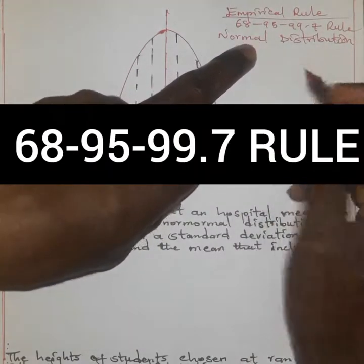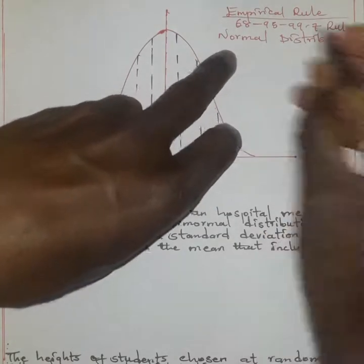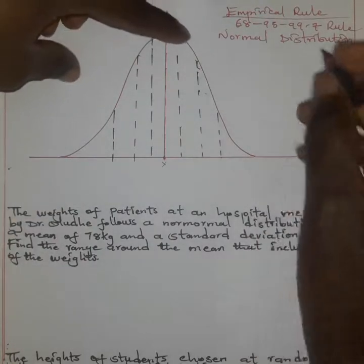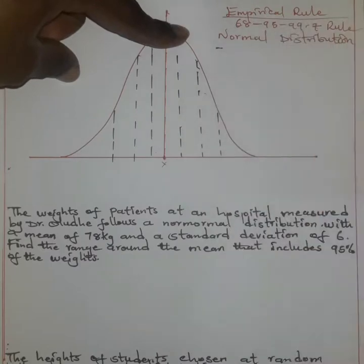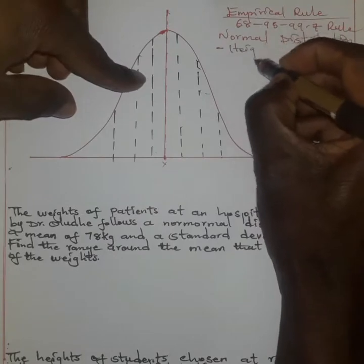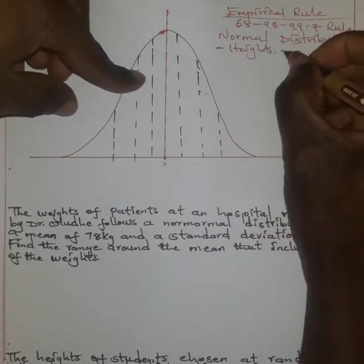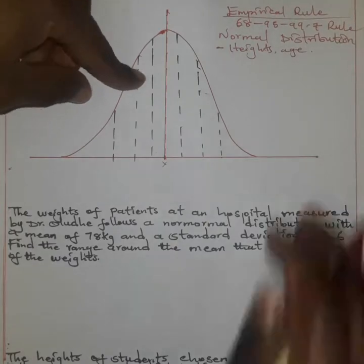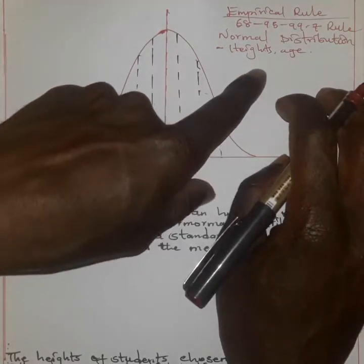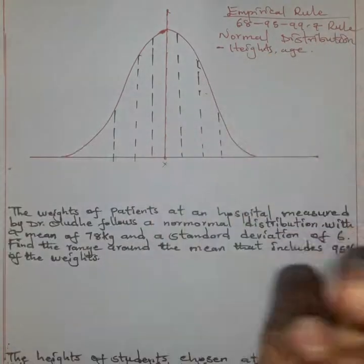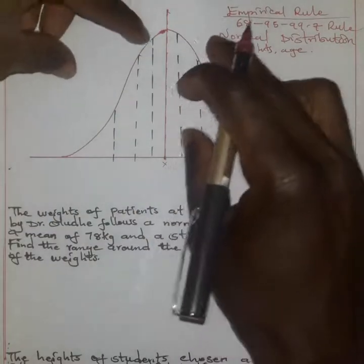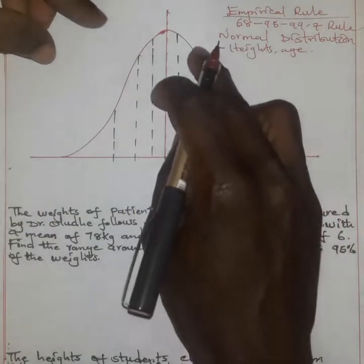When we talk about normal distribution, we are referring to a particular scenario whereby data which are normally found in everyday life — like heights and age — are evenly distributed, such that these variables will vary according to the individual and according to the environment. This data in real-life situations will normally be represented by what is known as the normal distribution.